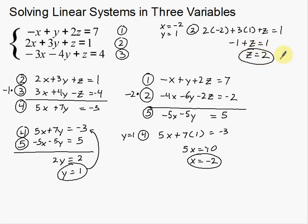So there are my three results: x = negative 2, y = 1, and z = 2. That's just one example of solving a linear system in three variables. Notice all the organization that was needed — labeling equations one, two, and three, keeping track of all equations used, labeling new equations four and five, and noting which equations you plug values back into. The organization is what's going to get a lot of students on this — you need to be organized to effectively, efficiently, and accurately solve these systems.